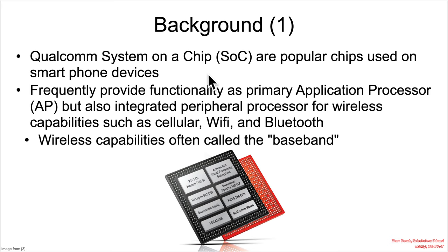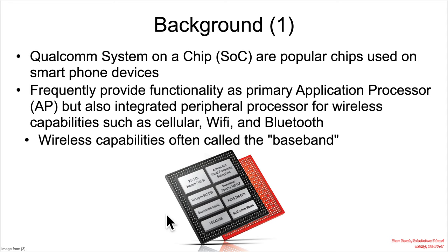With typical smartphone SoCs, you have a primary application processor which runs the main code and the main operating system — that's what you normally think of as the CPU of the phone. But because it's a system-on-a-chip, it's a tightly integrated package that has a whole bunch of other sub-components on the same silicon.